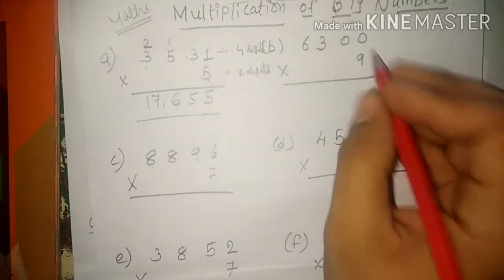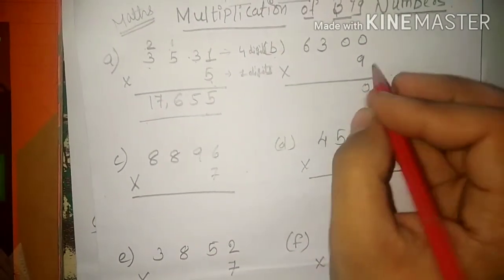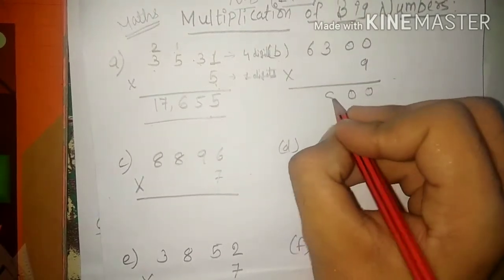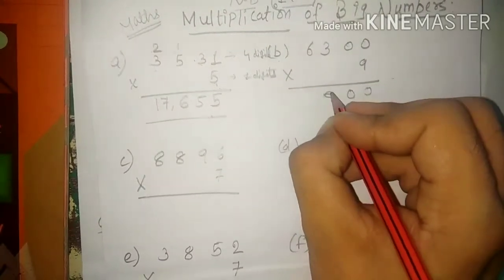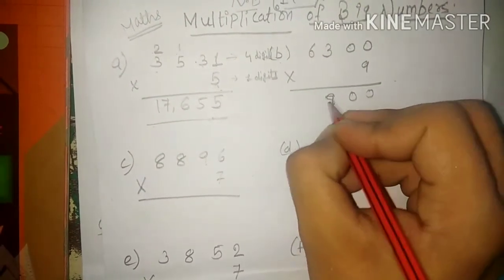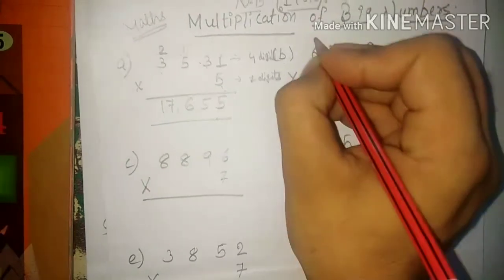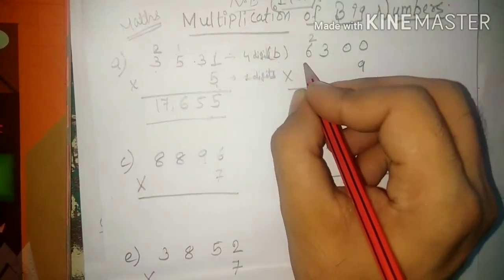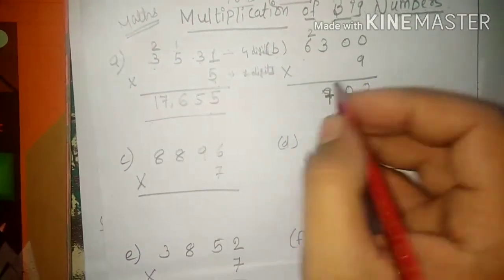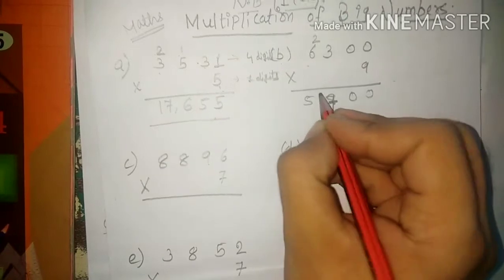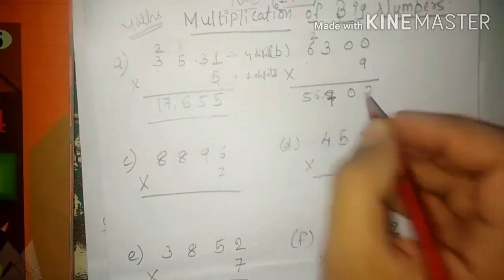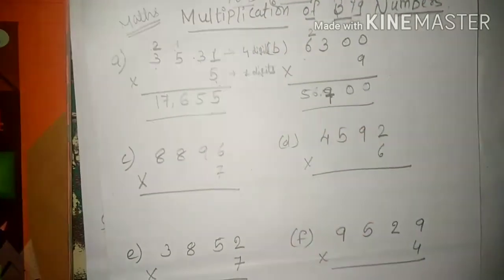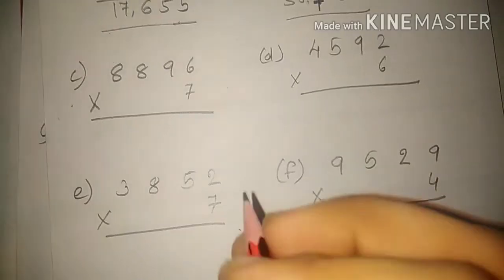The next one: 9 zeros are 0, 9 zeros are 0, 9 threes are 27 — 2 will go up as carry. And 9 threes are 54, 54 plus 2 is 56. Let's do the next one.